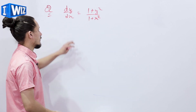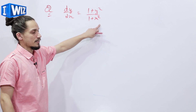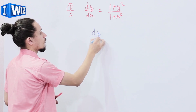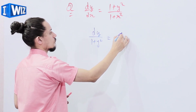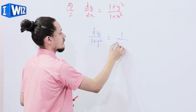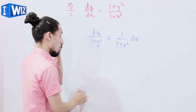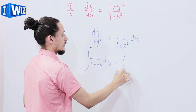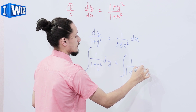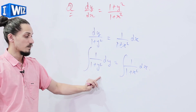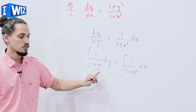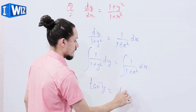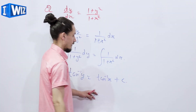The first example: we have dy/dx = (1 + y²)/(1 + x²). First step, separating the variables, we get dy/(1 + y²) = dx/(1 + x²). Integrating both sides, integral of 1/(1 + y²) dy equals integral of 1/(1 + x²) dx. The integral of 1/(1 + y²) is tangent inverse y, so we get tangent inverse y = tangent inverse x + c. Hence the result.